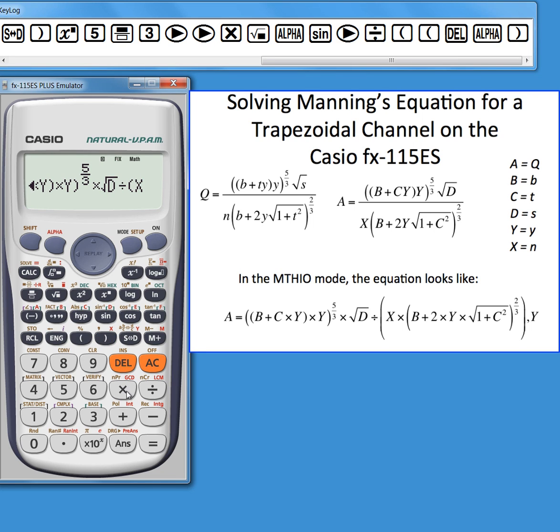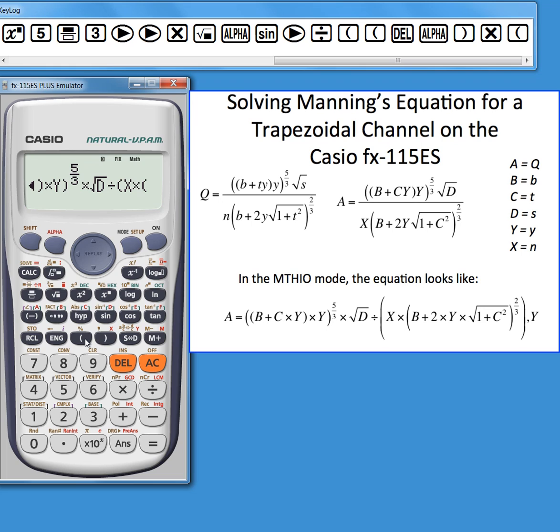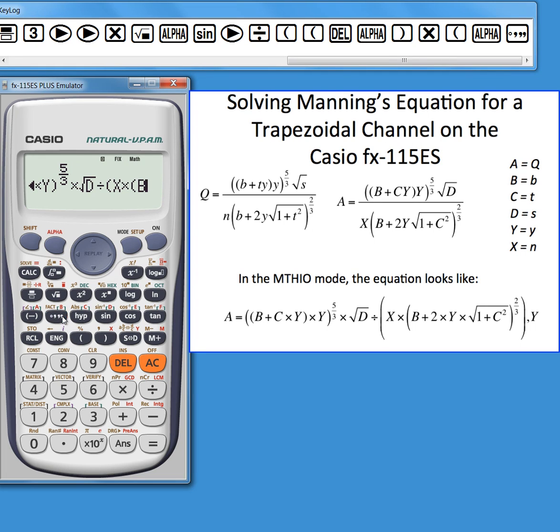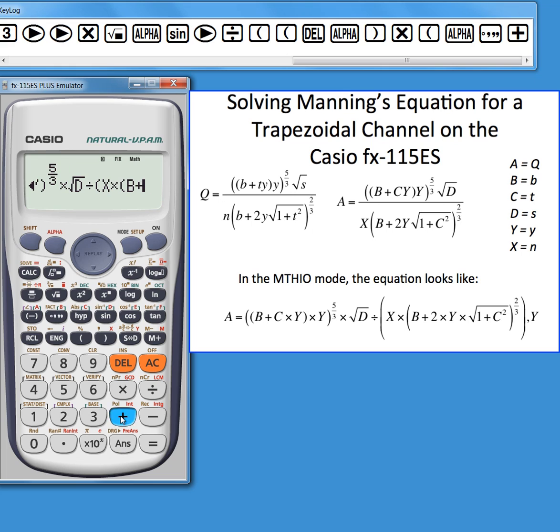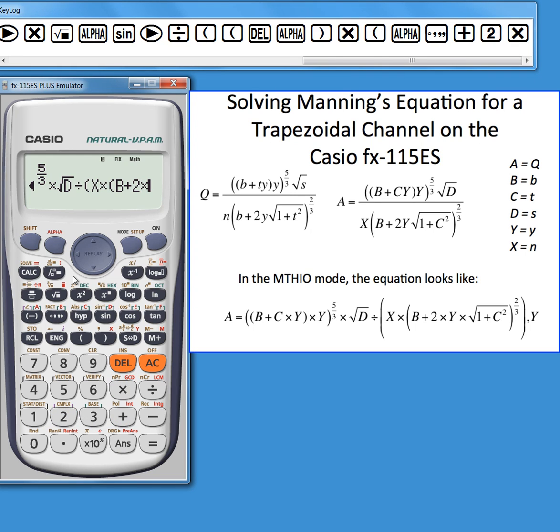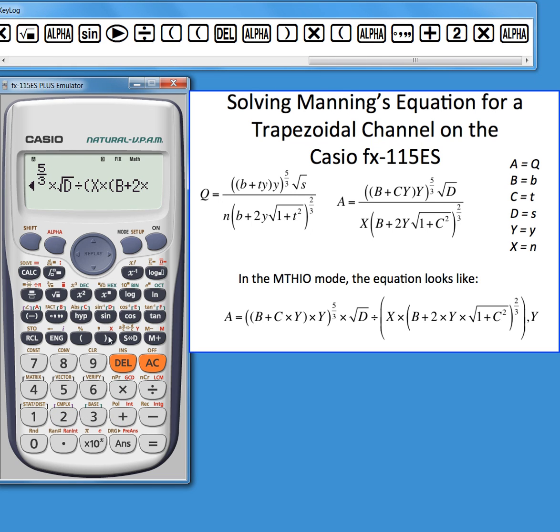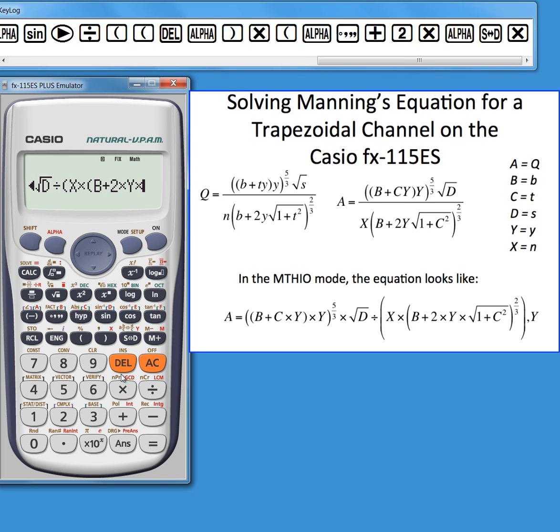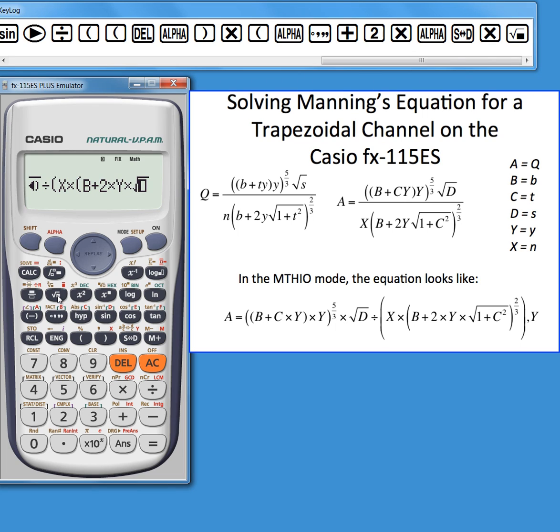Multiply that by left parentheses b plus two times y, times the square root. Again, I'm in the math I.O. mode so I can make it look pretty much like the original equation.